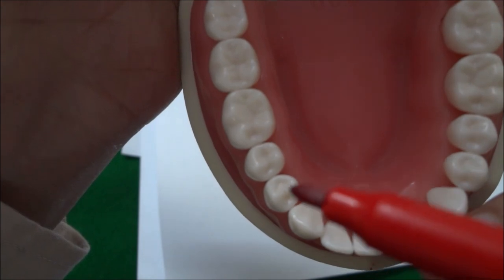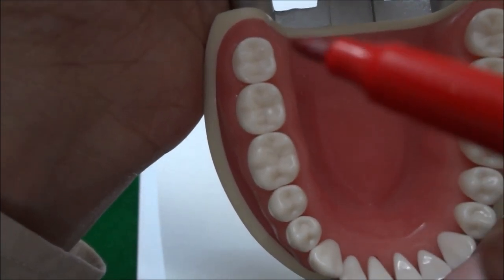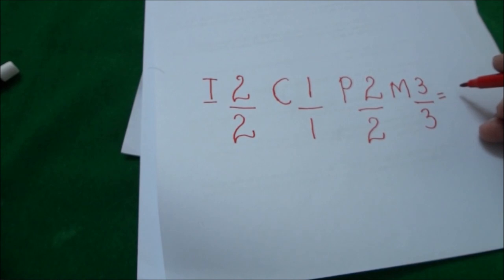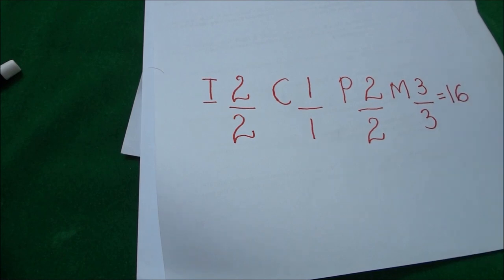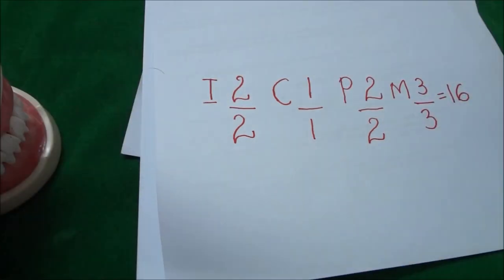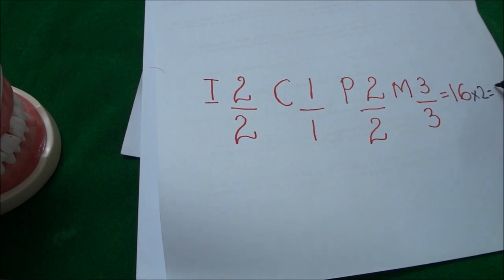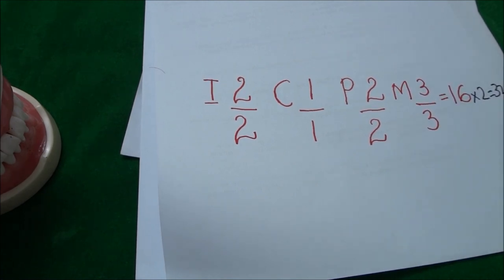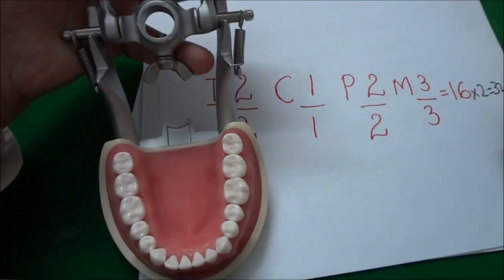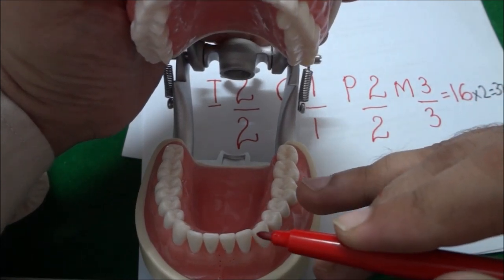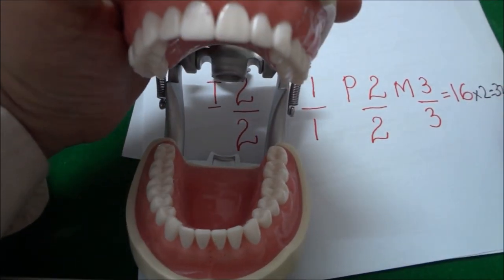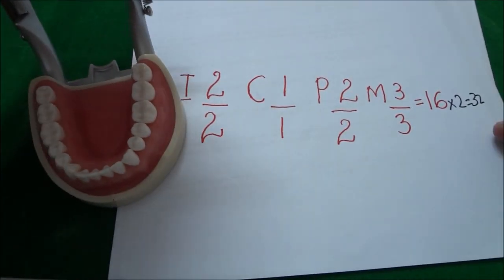Counting from central: one, two, three, four, five, six, seven, eight. So the total number of teeth in the maxillary and mandibular right quadrant are 16. This is the dental formula for human permanent dentition. Another way to express it is to multiply by two — so the total number of teeth will be 32. This means the teeth of the left side are also included: the left maxillary quadrant and the mandibular left quadrant. We multiply by two and the total number of teeth is 32.